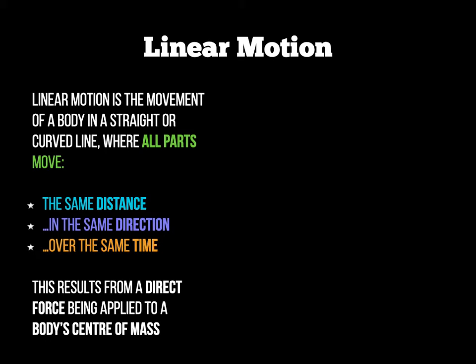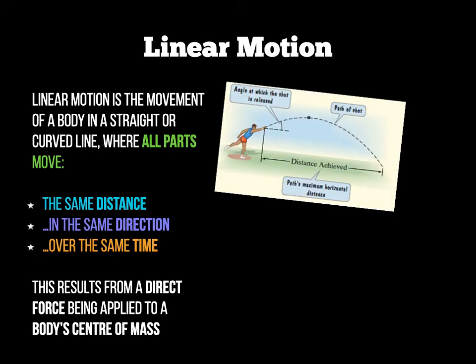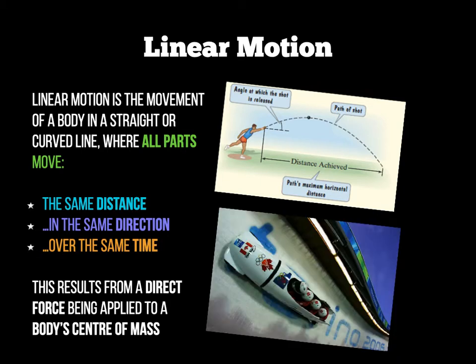You'll also need some examples of linear motion in sport. The simplest example is a shot put — as it is thrown, the path it travels is a curved line, as shown in the picture. Another good example, viewed from a bird's eye point of view, is a bobsleigh travelling in a straight or curved path along a track. A third example is a hundred metre sprinter: although their arms and legs don't move in a straight path, the torso or centre of the body travels in a straight path from start to finish.